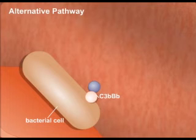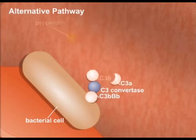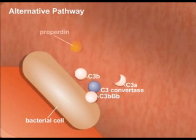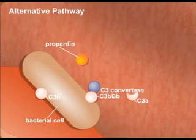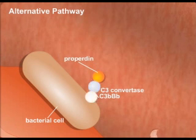This forms C3BBB, analogous to C4B2B. Both structures, C4B2B and C3BBB, are called C3-convertase. C3-convertase rapidly cleaves more C3 into C3A and C3B, and C3-convertase is further stabilized by properdin, which allows another addition of C3B, forming C5-convertase.